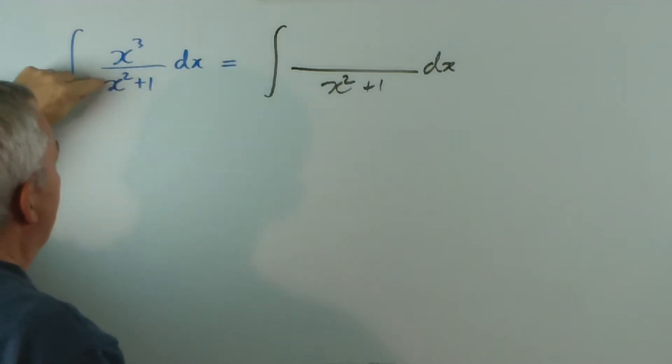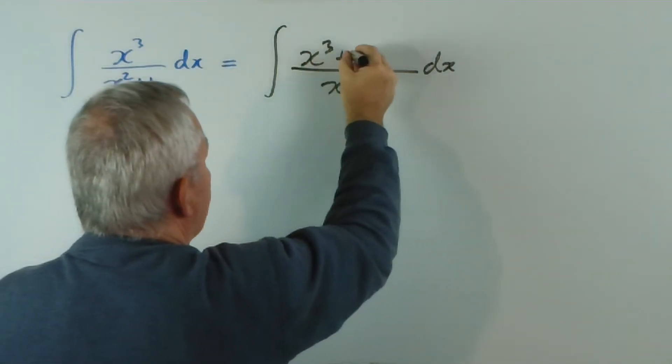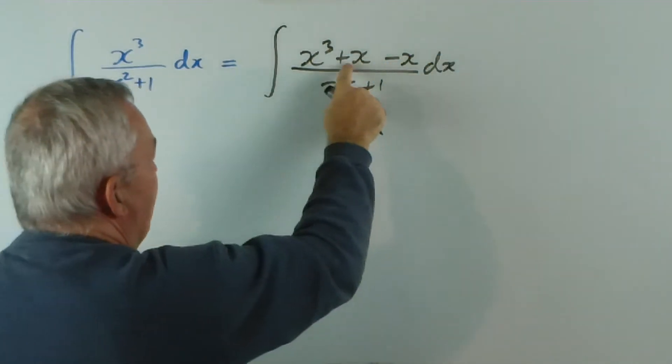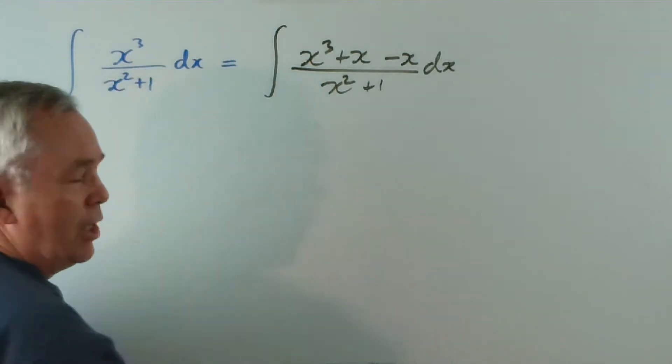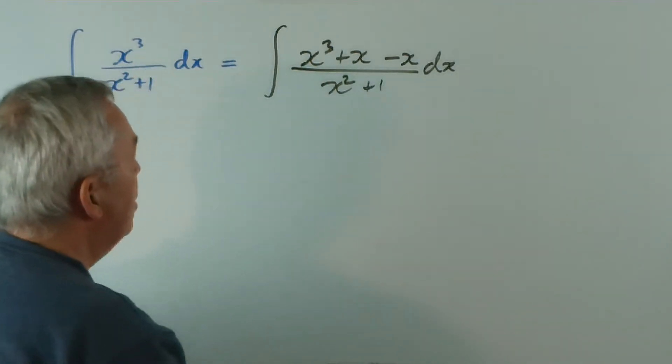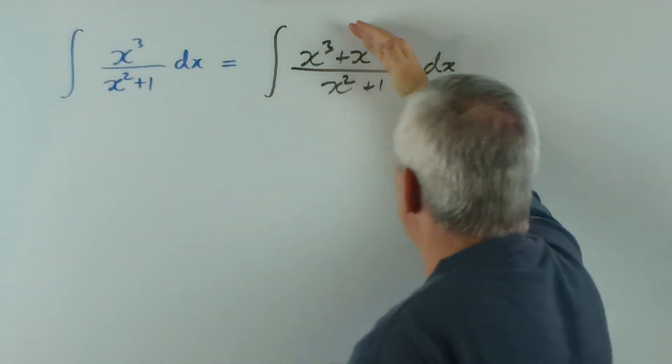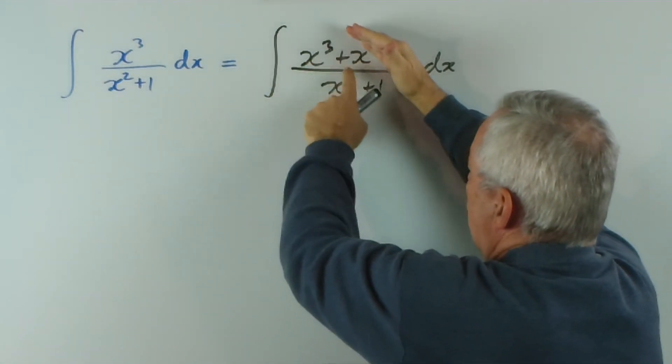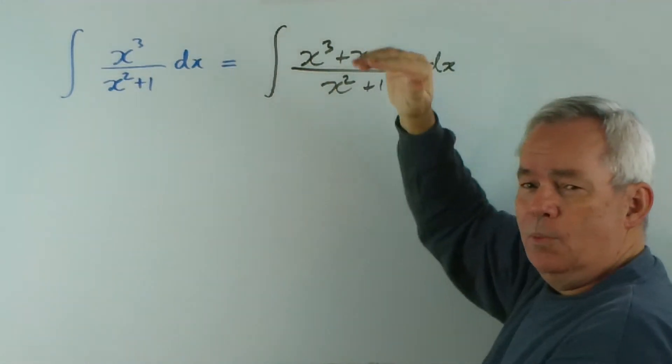I notice that if I multiplied this by x, I would get x cubed. If I multiplied this by x, I would get x. So I'm actually going to write x cubed plus x and minus x. So by having the plus x minus x, I'm not really changing the numerator at all. But if you notice this part, if I take x out as a common factor, I'll get x squared plus 1, which will work beautifully.